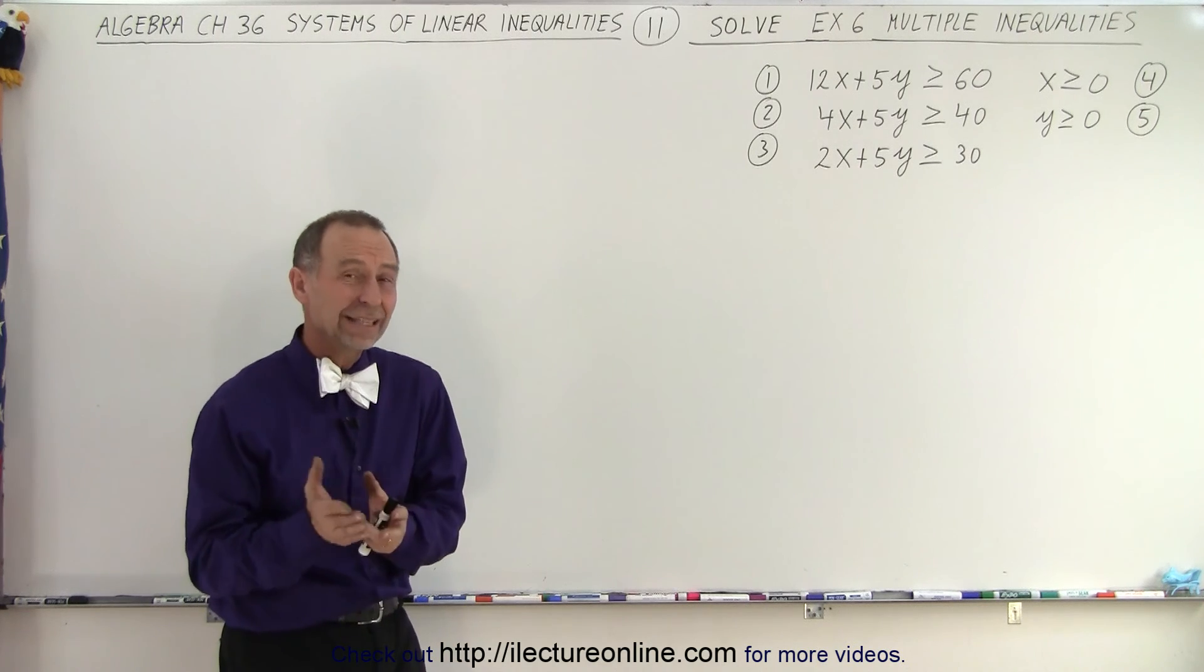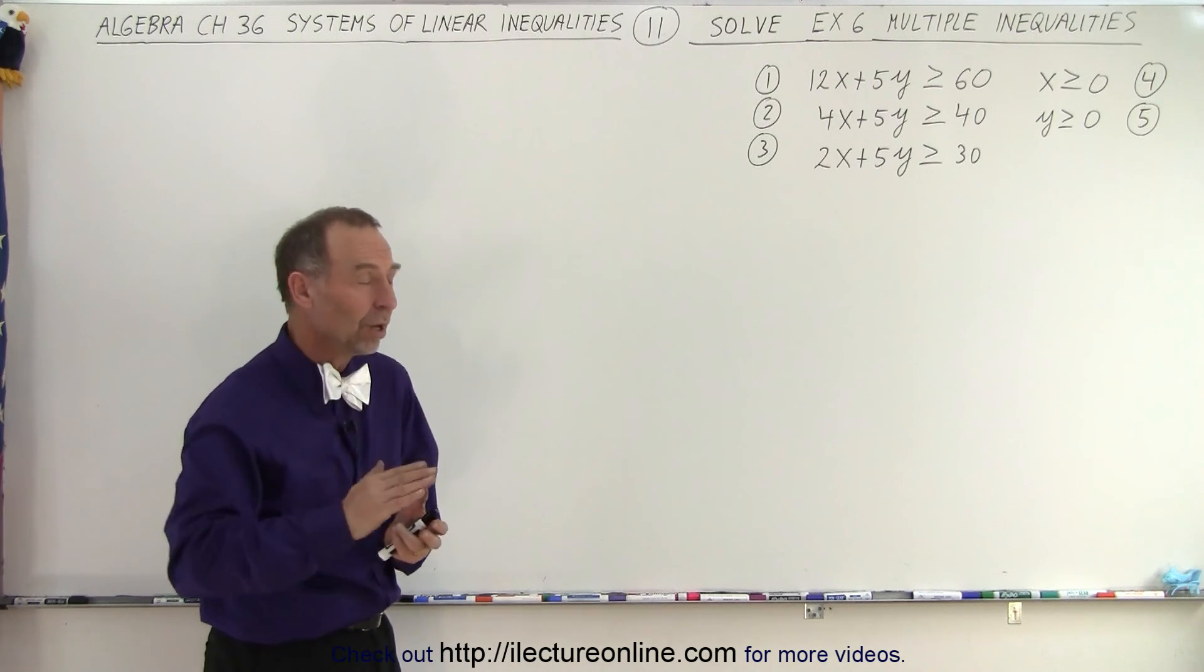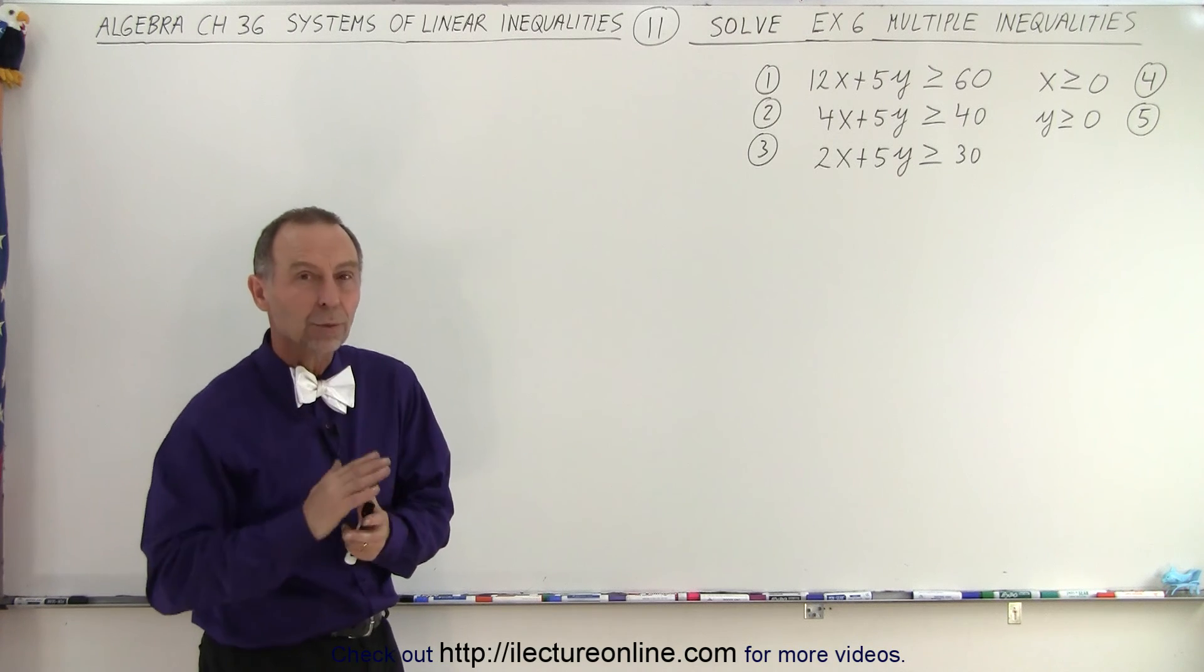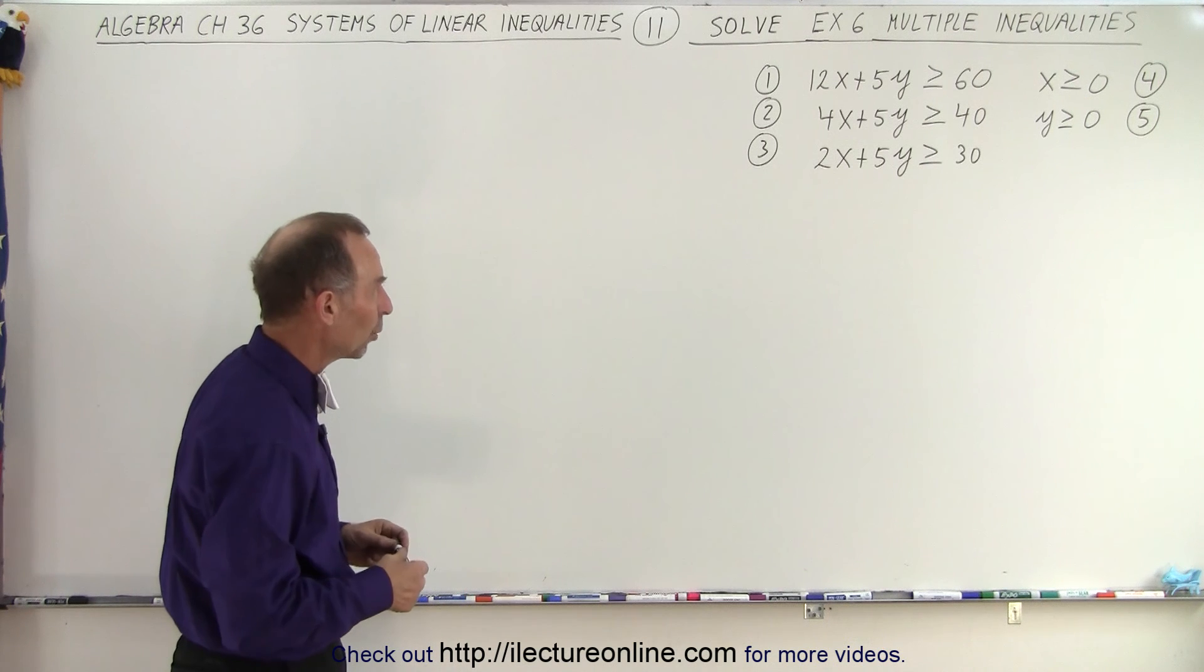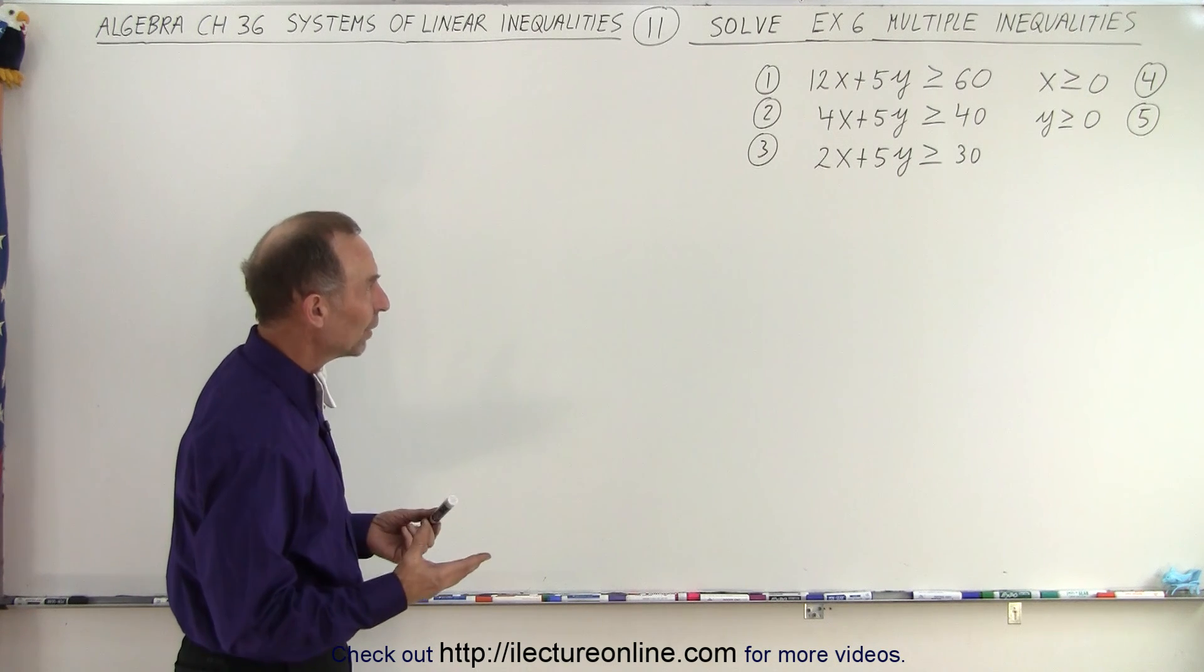You can now see why the technique where you erase what you don't want or at least black out what you don't want and leave blank what you do want makes more sense when you have all these multiple inequalities. So how do we do that?